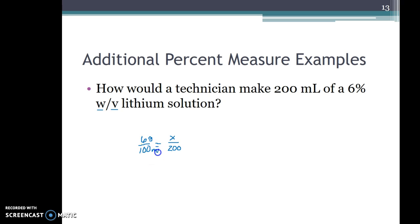And so I can solve with a cross product, and so we have 100X is equal to 1200 and then we'll divide both sides by 100 and we get X is equal to 12. And again going back here, matching up our labels would be grams, this would be mL, so 12 grams.